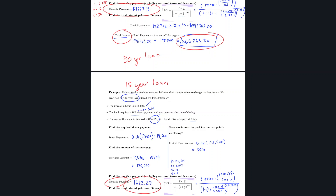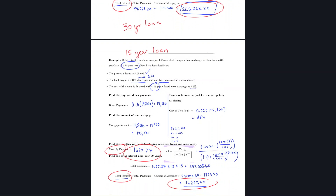The takeaway is: even if you have a 30-year loan, if you can pay more than the required monthly amount, you can pay off the loan sooner and reduce total interest paid. By paying extra, you can simulate a 15-year loan's interest savings, as illustrated by the significant difference in interest between these two examples.